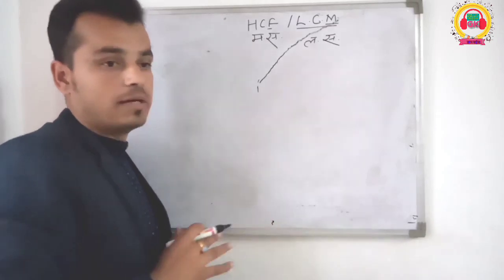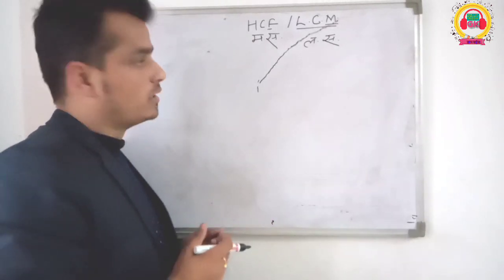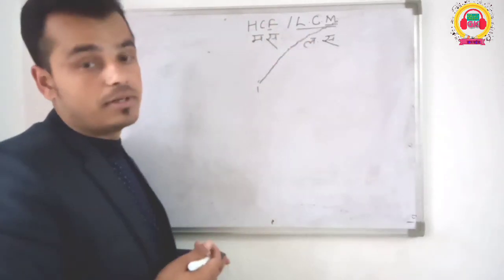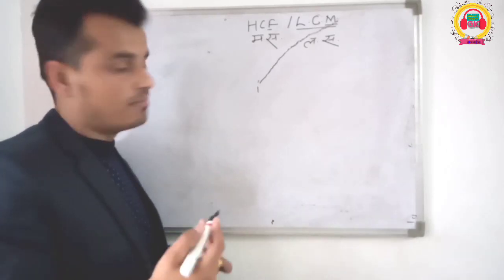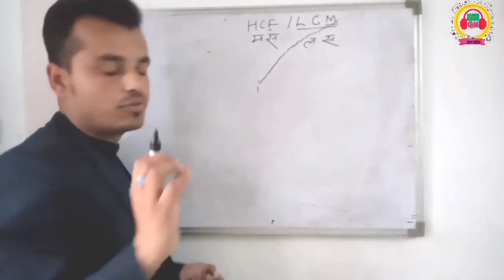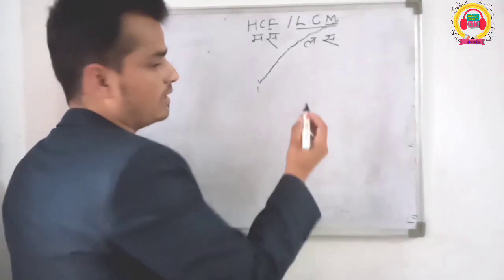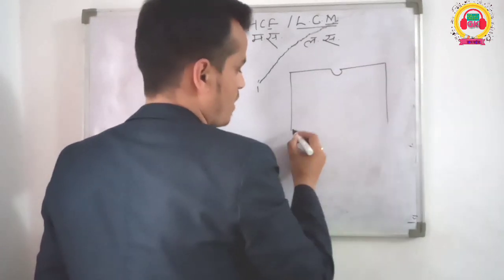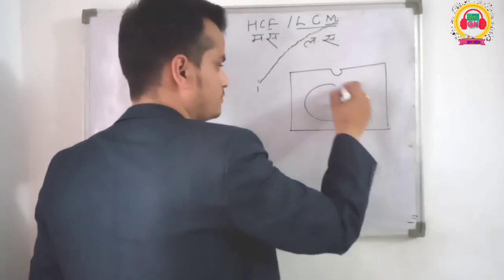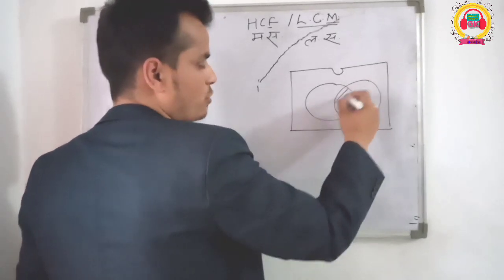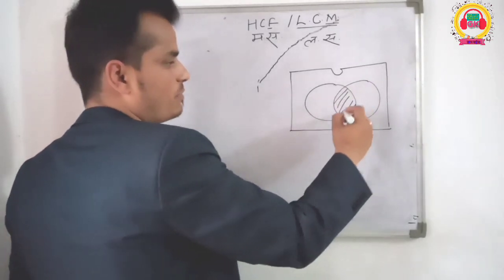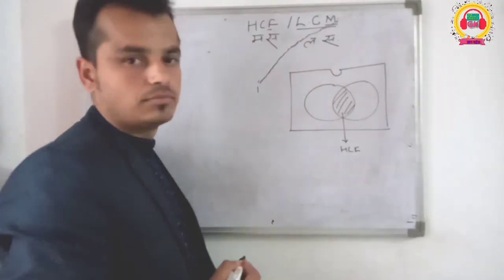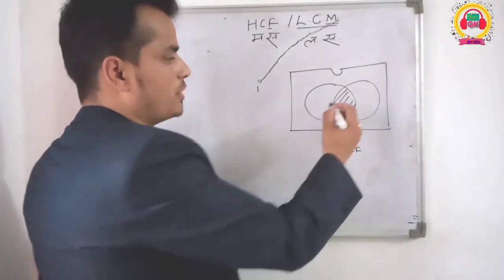By the division method, you can find multiples and factors. This common part is called HCF. This is the figure.